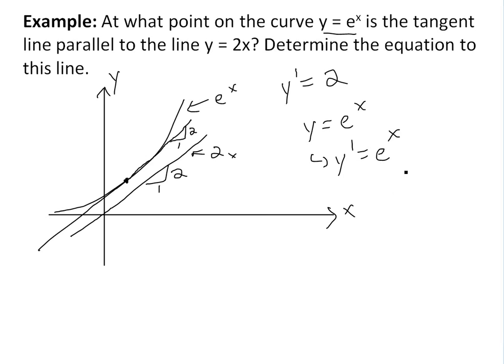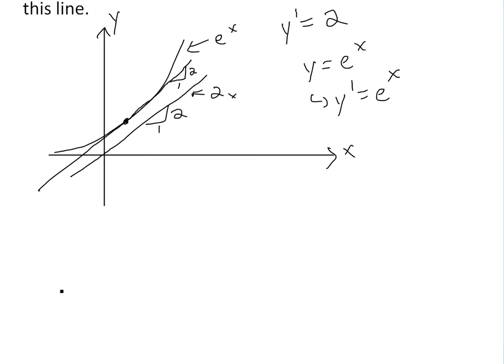Now to find out the point, this point right here, we just have to solve for x when we set it to 2. So we basically have y prime equals e to the x equals 2. So then to solve this, we just take ln of both sides here. We're going to have ln of e to the x. Make sure you watch my video on logarithmic functions to see why we do this.